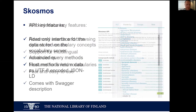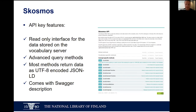In addition to the web interface, we have the API that you can use for integrating SKOSMOS with other systems. The API is a read-only interface for the data stored in your vocabulary server. There are several methods for querying the data: global methods, vocabulary-specific methods, and concept-specific methods. Most of these methods return data as JSON-LD. We also have a Swagger description - interactive documentation - that comes with the API, shown on the right-hand side.